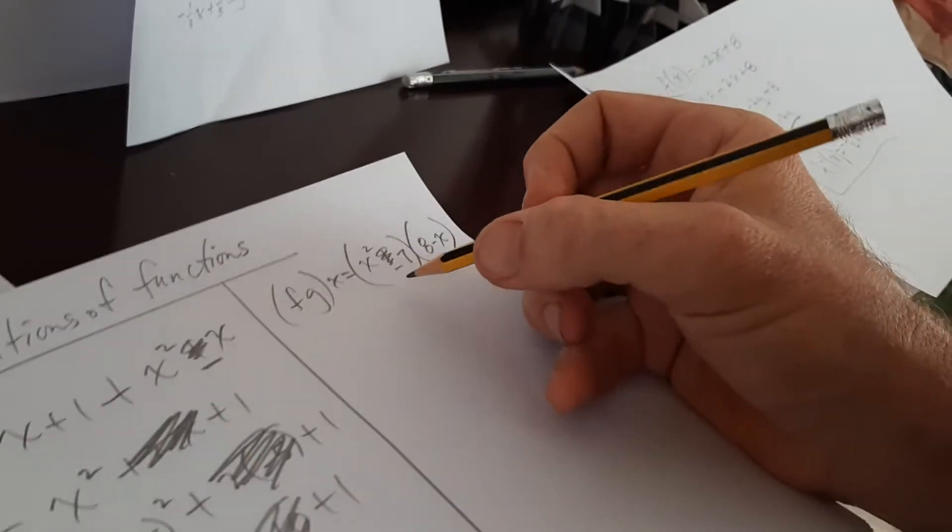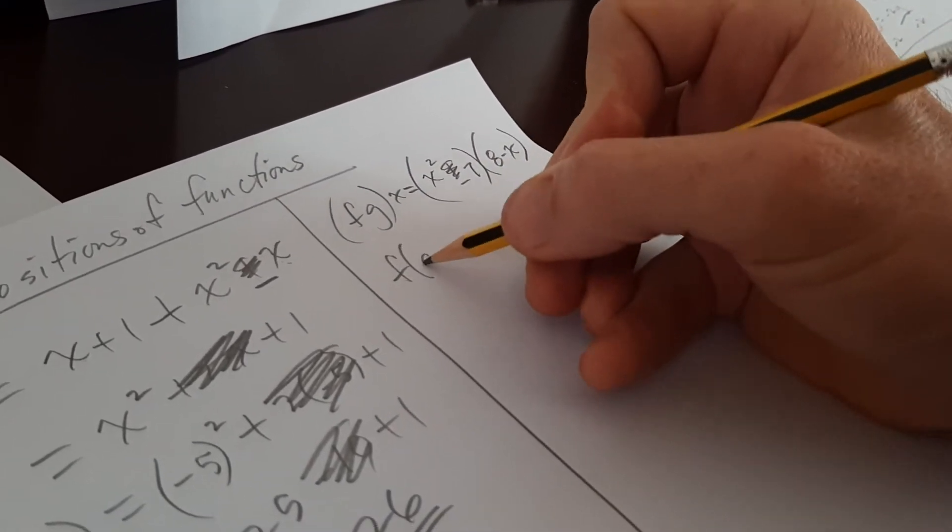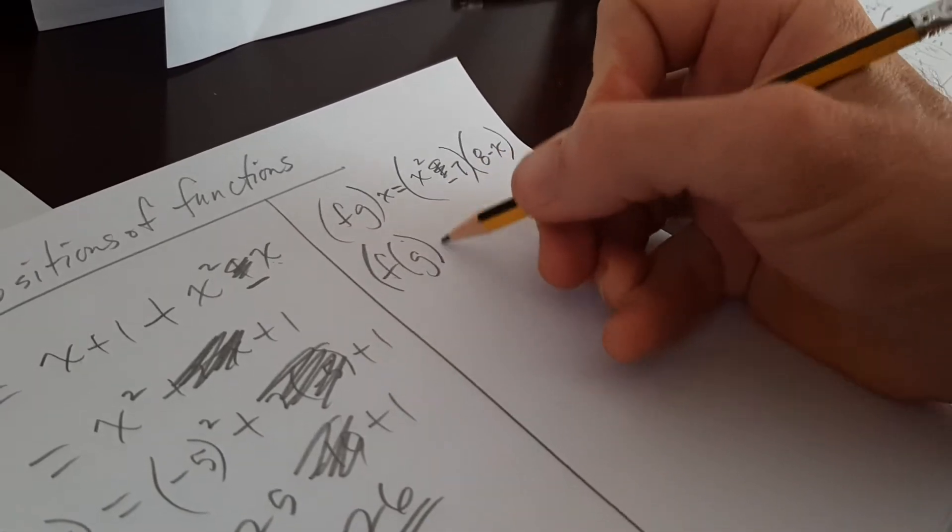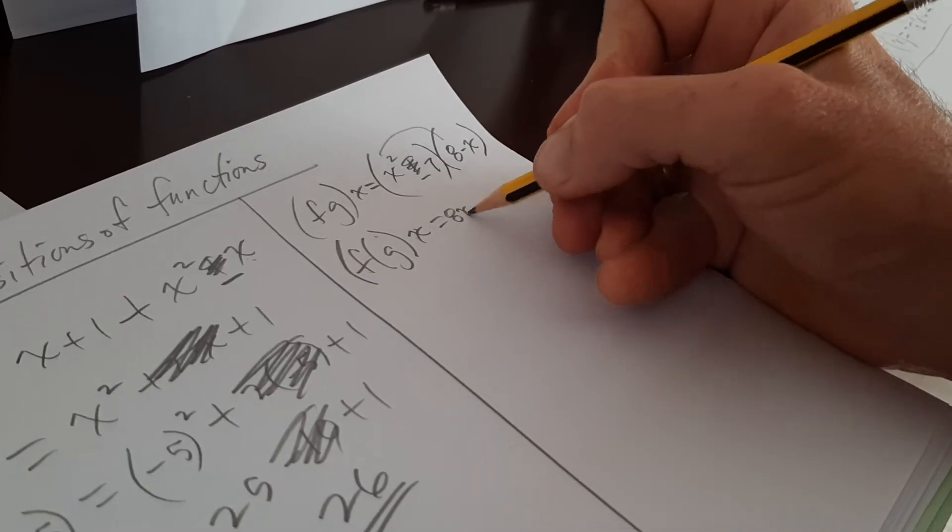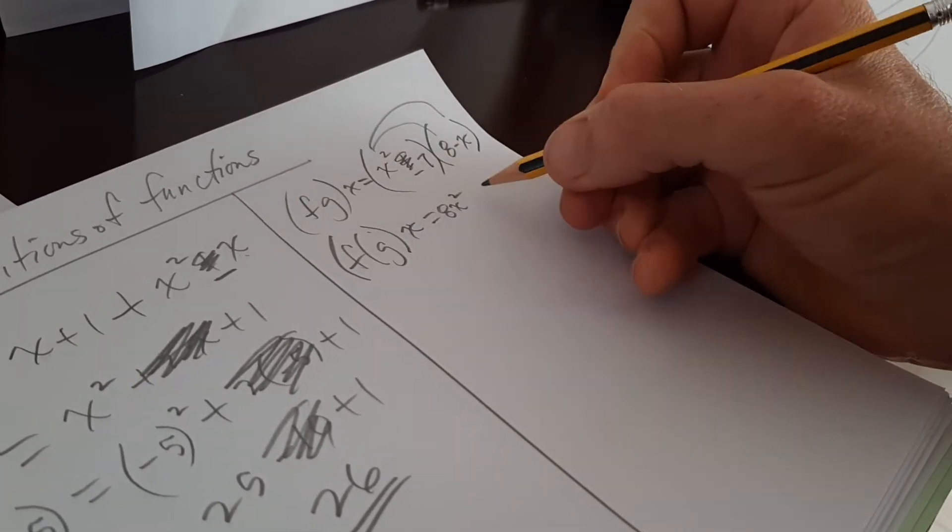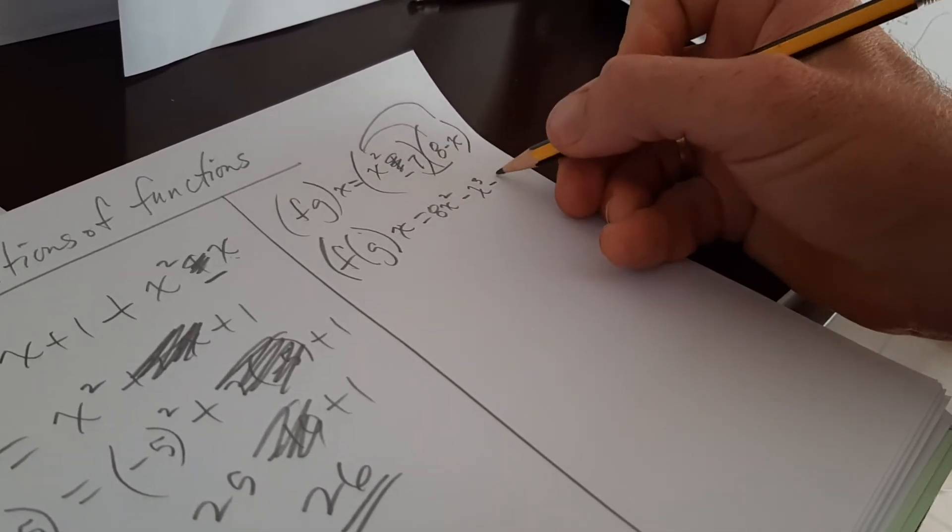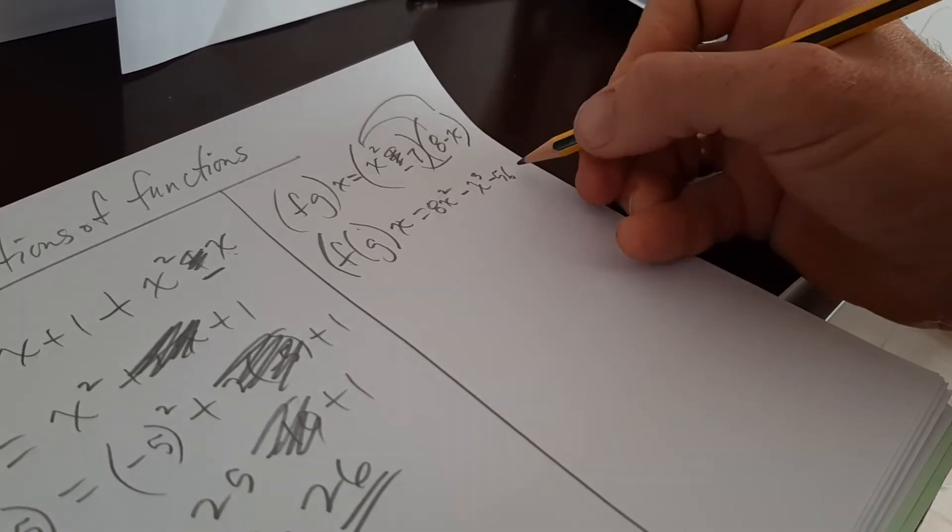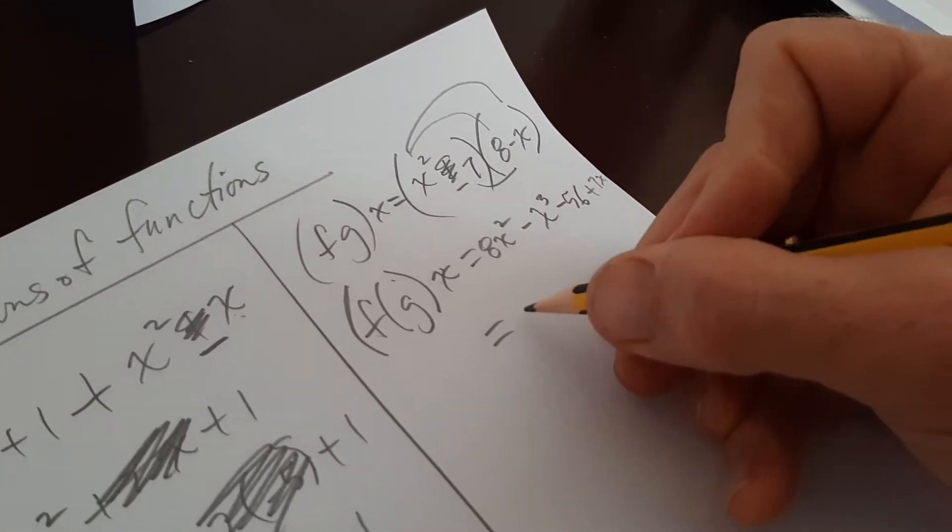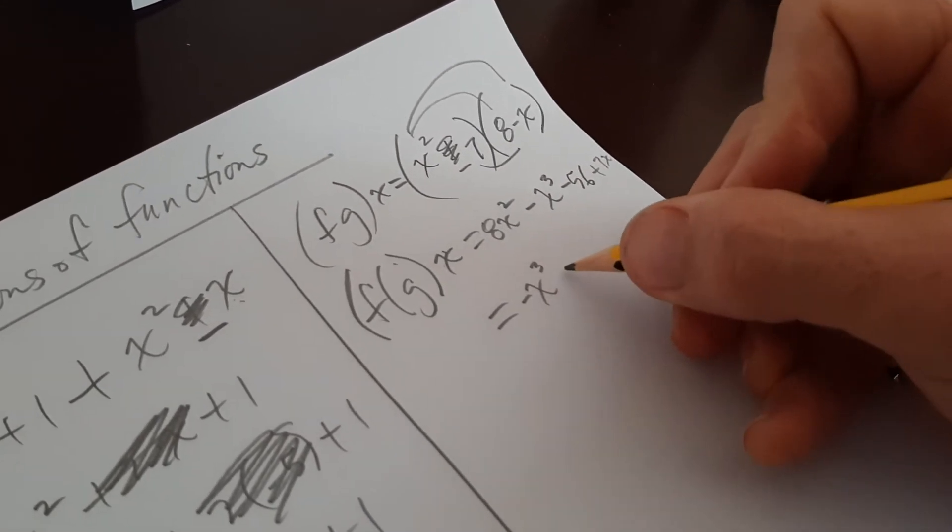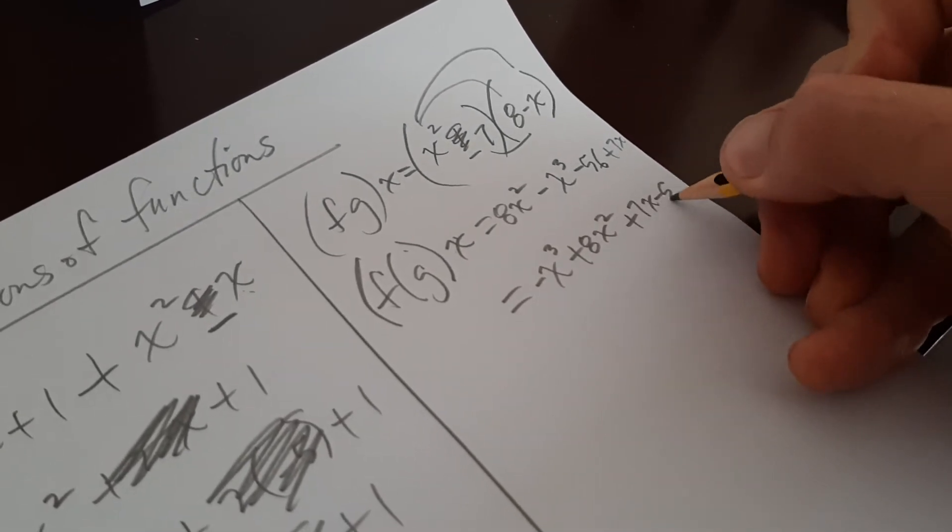You can substitute your minus 1 in there now. That might be easier. I don't know. I'm going to go ahead and... Oops. fg of x equals... So I'm going to go ahead and multiply this out. So I've got 8x squared minus x cubed minus 56 plus 7x. I know I'm doing it kind of the long way. It's okay, though.